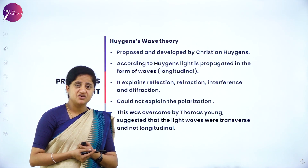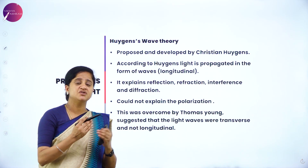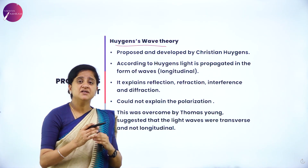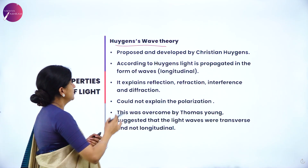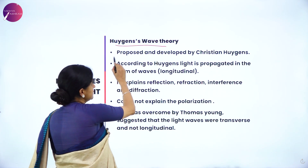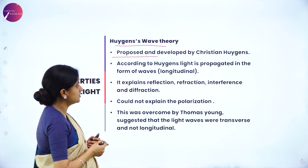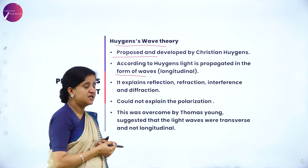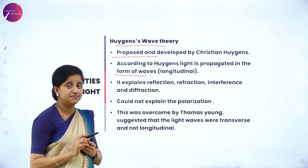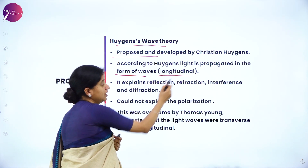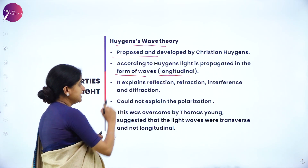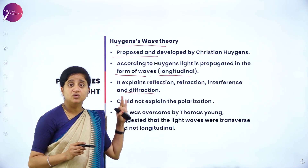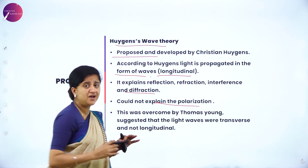Before understanding the wave nature of light, let us know about the evolution of this wave theory, starting from Huygens wave theory. This theory was proposed and developed by scientist Christian Huygens. According to Huygens, light is propagated in the form of waves — it is not a particle but a form of wave, and specifically a longitudinal wave. It explains the concepts of reflection, refraction, interference and diffraction, but it could not explain the theory of polarization.